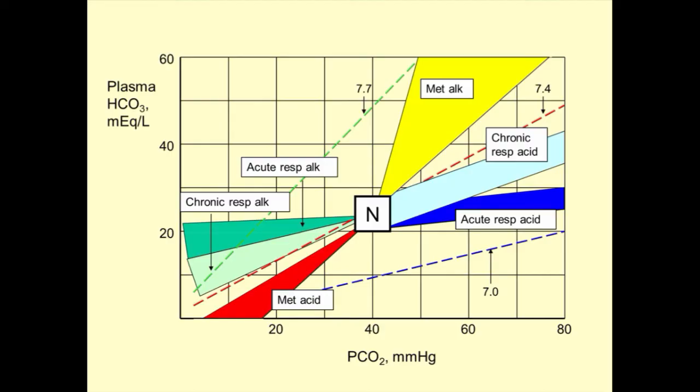Finally, if all else fails, you can use an acid-based nomogram. There are several versions, and this one displays the PCO2 on the x-axis, the plasma bicarb on the y-axis, and the pH in the diagonal isobars.